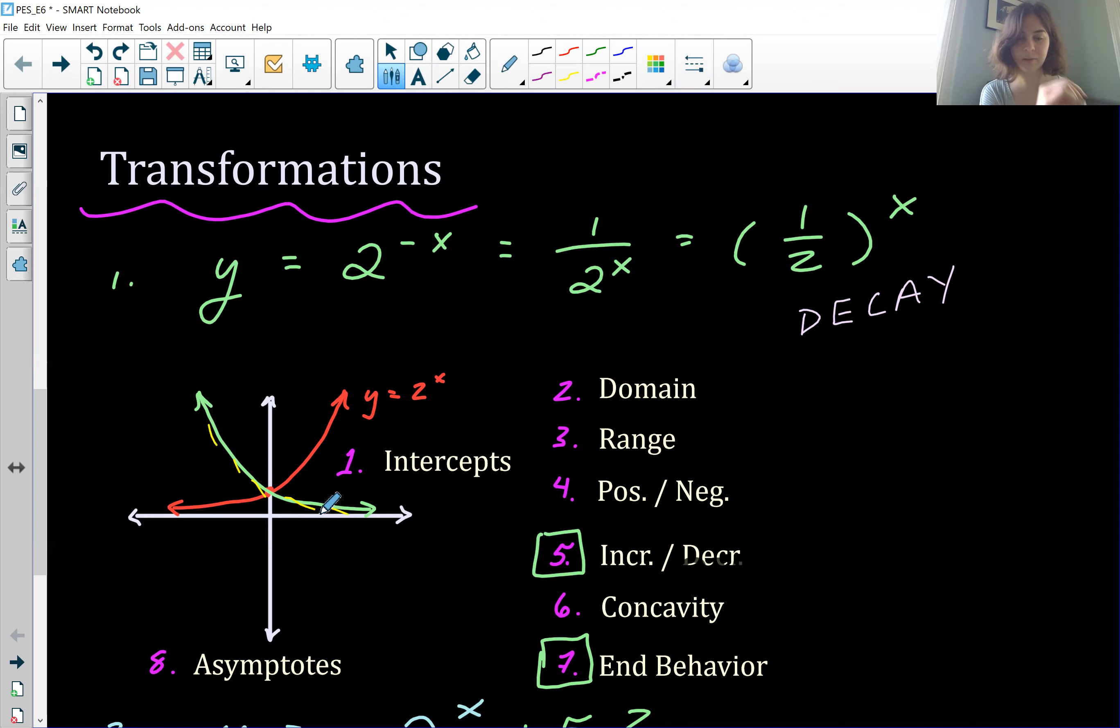If I draw my little line, all of our slopes are negative. So yeah, a fraction raised to an exponent, that's going to be decreasing. Concavity stays the same. We still have that cup shape. End behavior, that's going to change slightly.